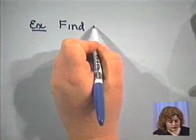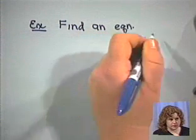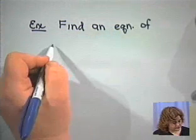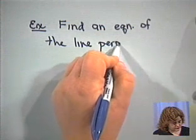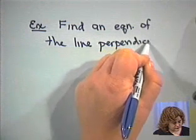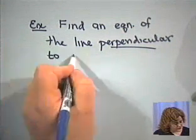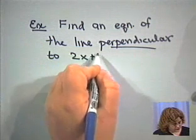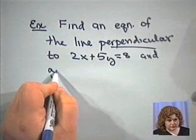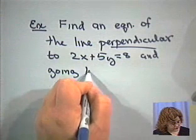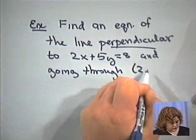So the way this is often stated is find an equation of the line perpendicular to, and then you get a line, 2x plus 5y equals 8, and going through, or sometimes it'll say containing, the point (2, 3).